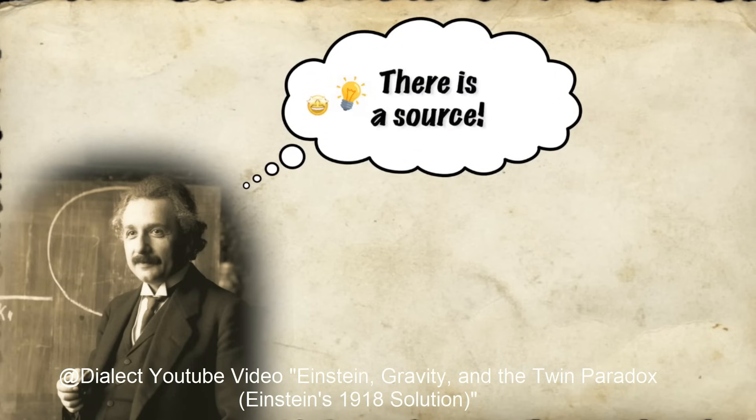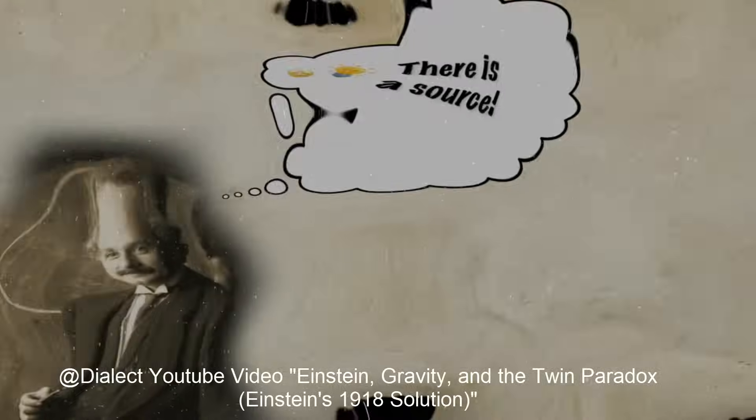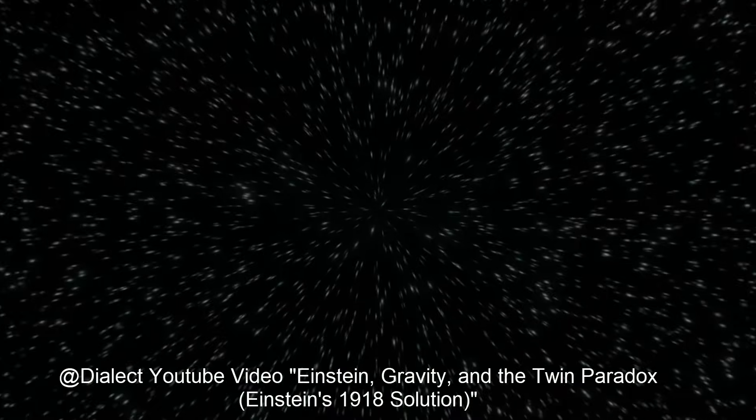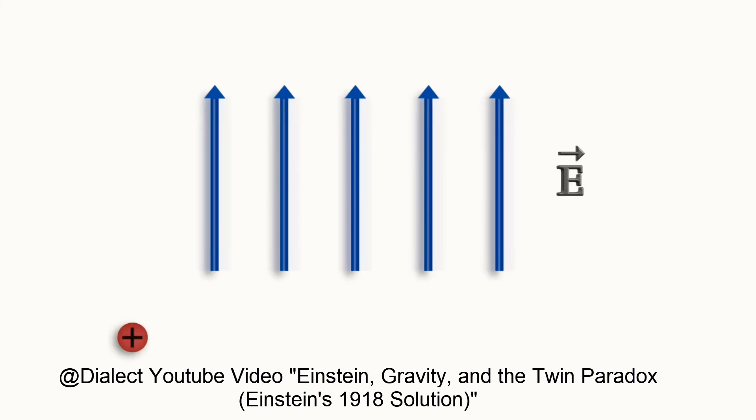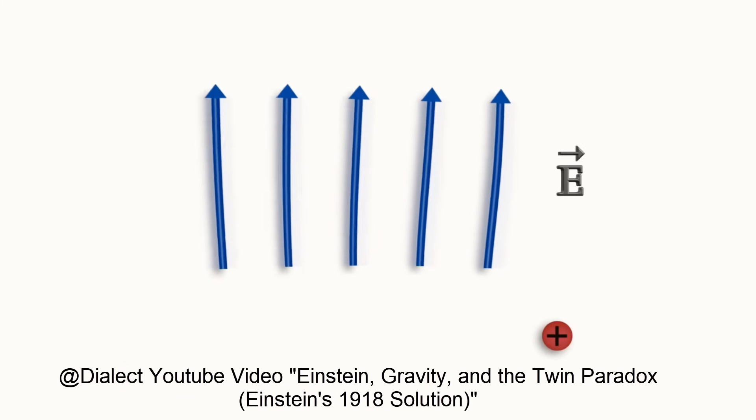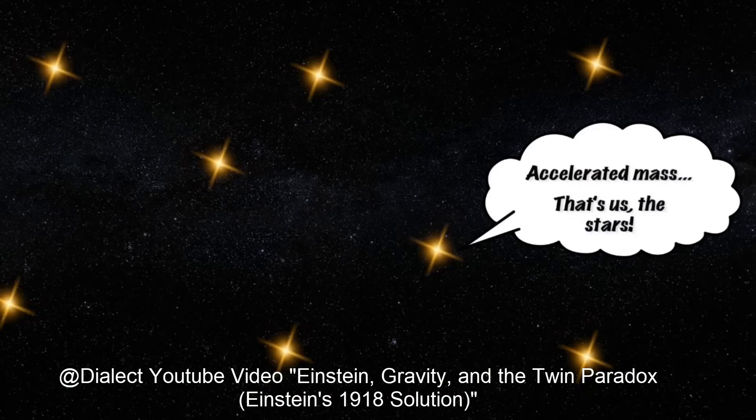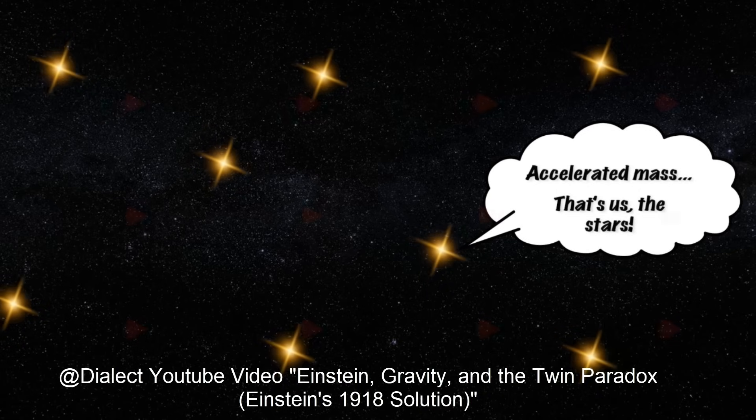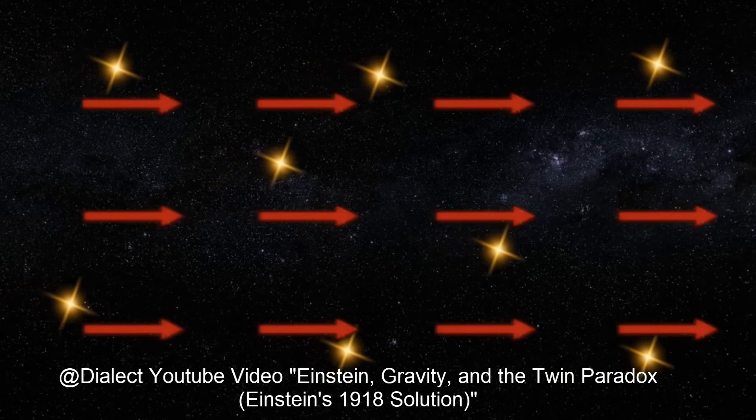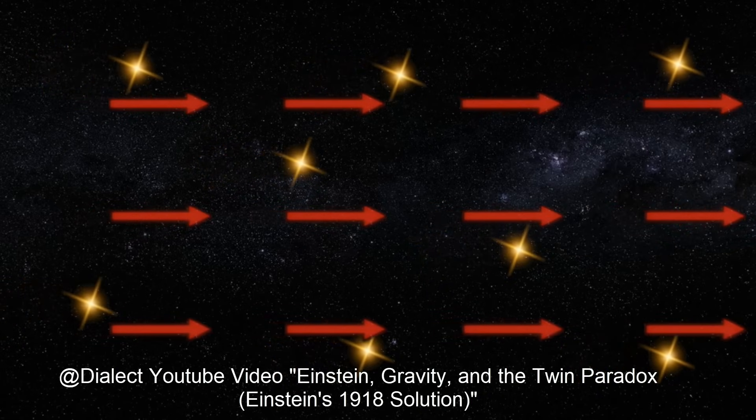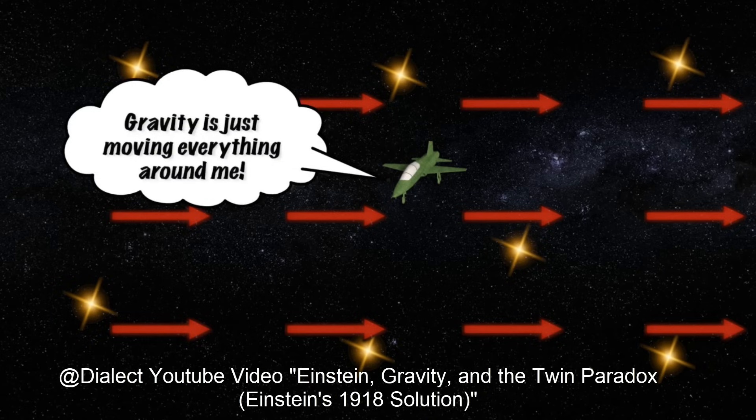He claimed that the source of the gravitational field could be attributed to the motion of the fixed stars. That is, he wrote, just as an accelerated charge induces a changing electric field, so should an accelerated mass induce a changing gravitational field. In this way, an observer's world view will remain consistent with being at rest, even if they are accelerating.